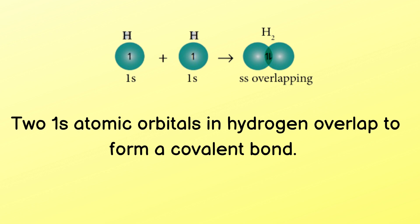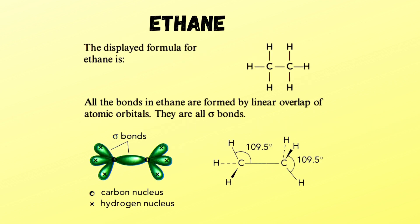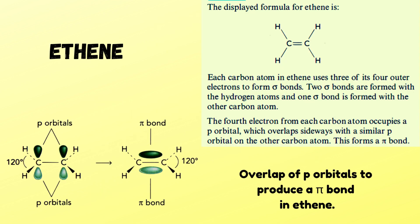As an example, in the hydrogen molecule, two 1s orbitals overlap to form a covalent bond. In ethane, the bonds are formed by linear overlap of atomic orbitals and all are sigma bonds.